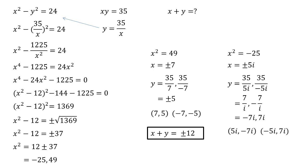So our pairings now are positive 5i and negative 7i, and negative 5i with positive 7i. Well, if we add the first two together we get minus 2i. If we add the second two together we get positive 2i. So x plus y equals plus or minus 2i.